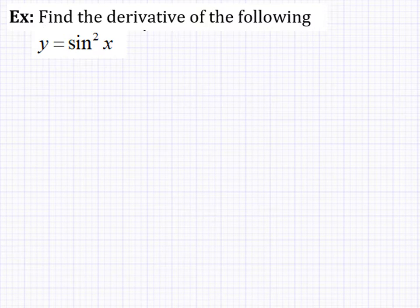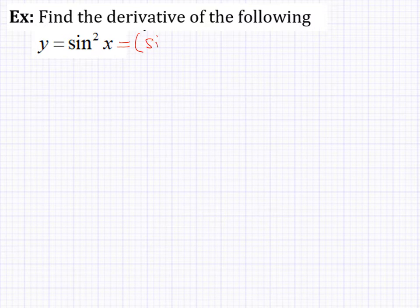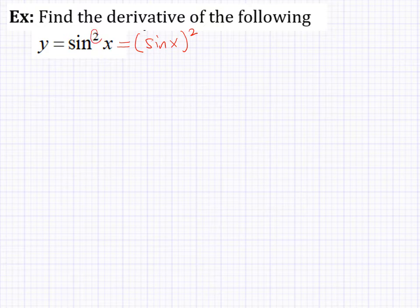Let's look at the chain rule as it relates to trigonometric functions. We have y equals sine squared x. The better way to look at this, especially at first, is to rewrite this as sine x all squared. The entire function is being squared. You should remember that from trigonometry — that's what this notation means: sine of x, all squared.